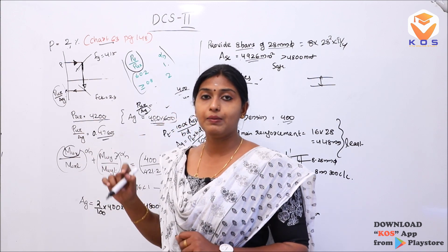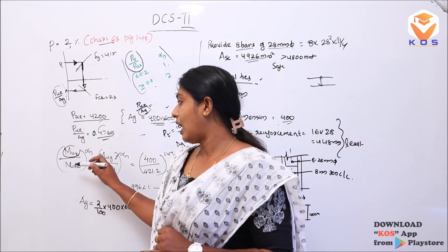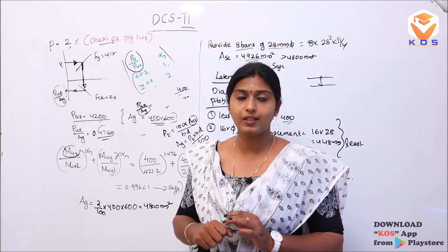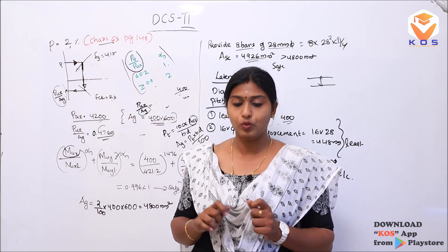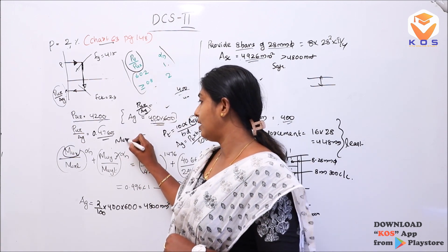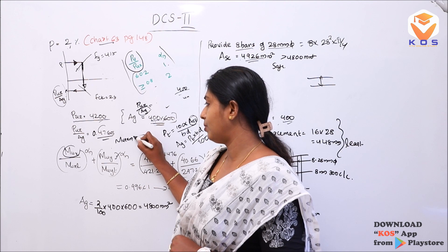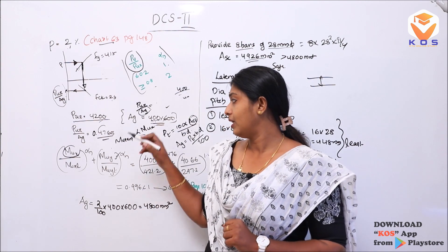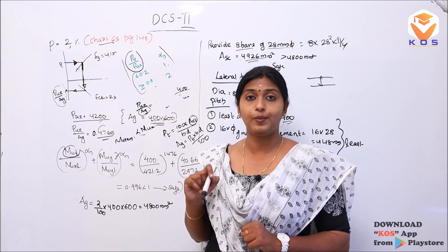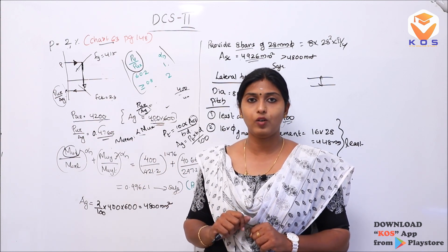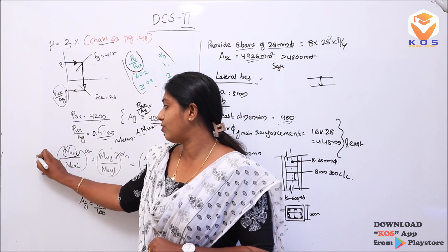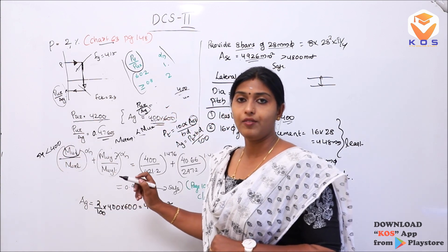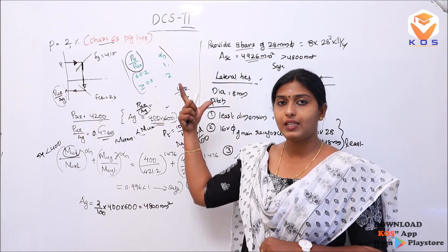We check the final condition: MuX minimum eccentricity is less than MuX. So we use MuX = 400 kNm (the greater value). The eccentricity value is 54 and the given moment is 400 kNm. We add the 400 value to complete the design check. That is how we solve this problem.